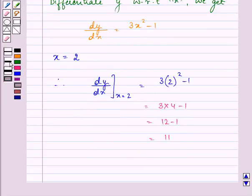Which is 12 minus 1, and the difference we have is 11. So the required slope for this question is 11. Take care of your calculations and hope you enjoyed it.